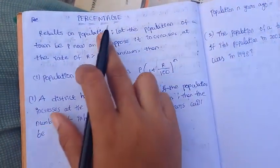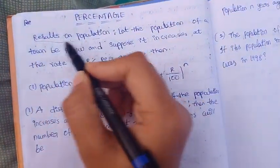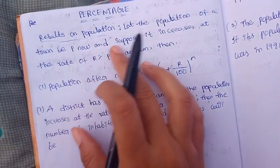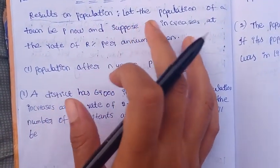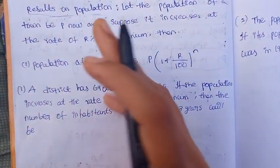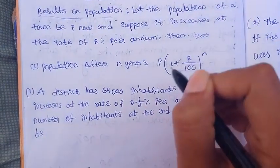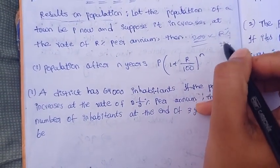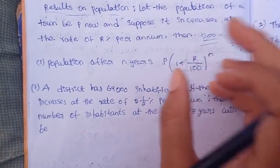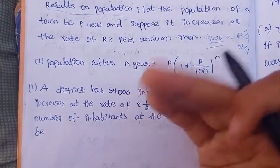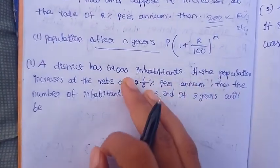First, the result on population — there are different types of problems. Let the population of the town be P. Suppose the population increases at a rate of 10% per annum. After N years, we have to use this equation: P into 1 plus R divided by 100, whole power N.